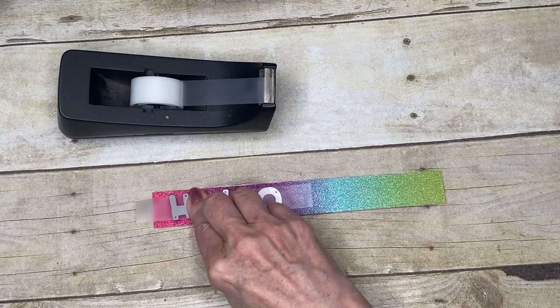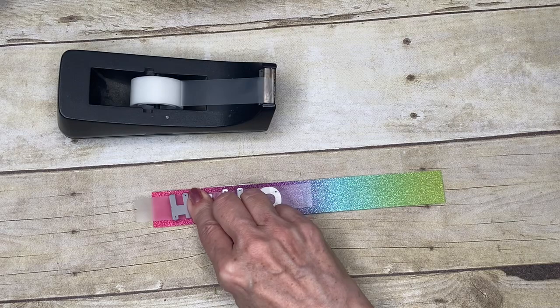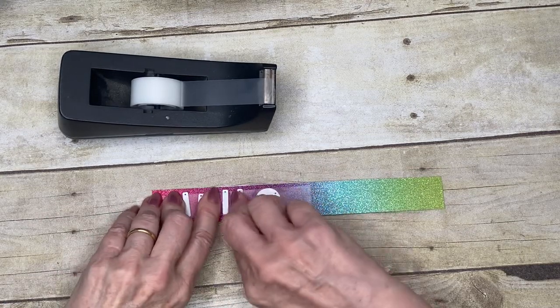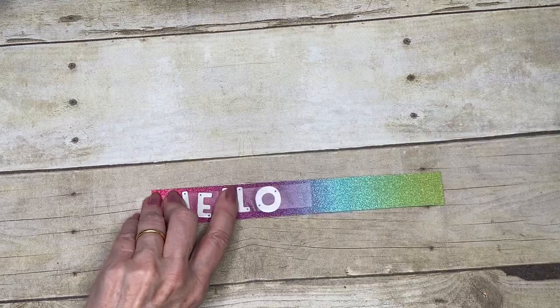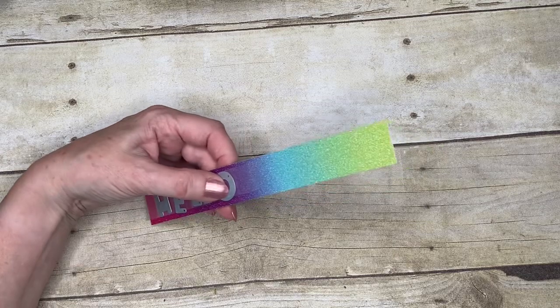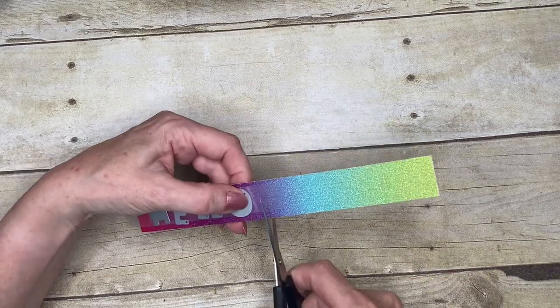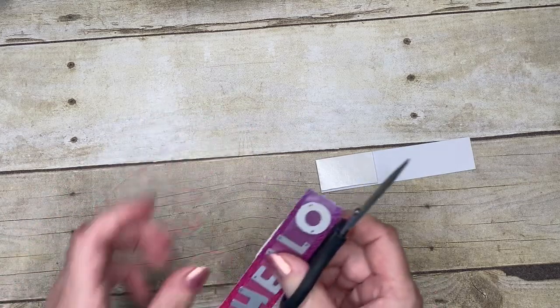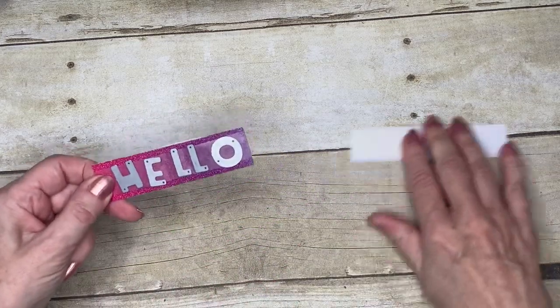Just press firmly down in between, just so that the tape tacks onto your glimmer paper like that. And then I'm just going to gently trim one end and fold the other end of the sticky down.